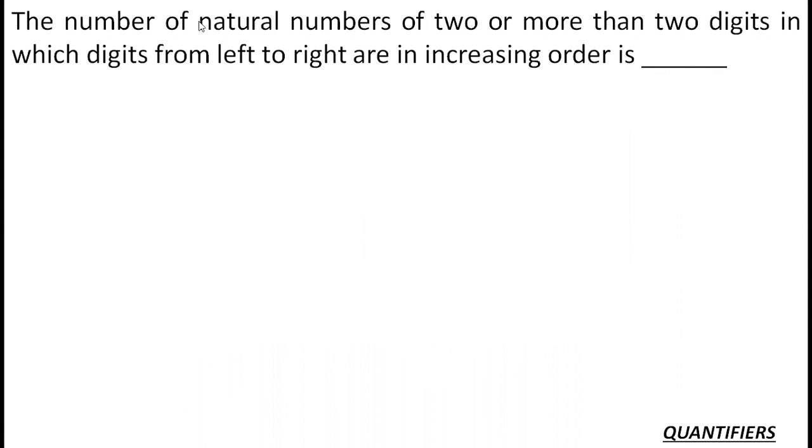What does this question say? The number of natural numbers of two or more than two digits in which digits from left to right are in increasing order. So two or more digits - the number can be of two digits, can be of three digits, can be of four digits, five digits, and so on, up to nine digits.